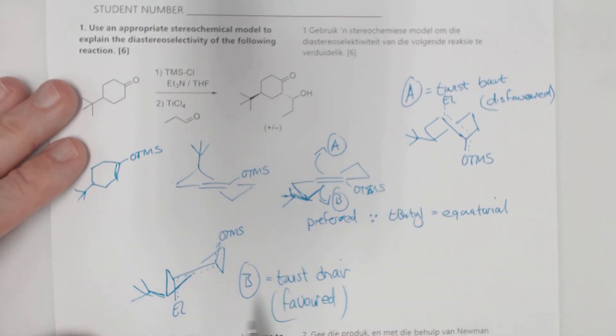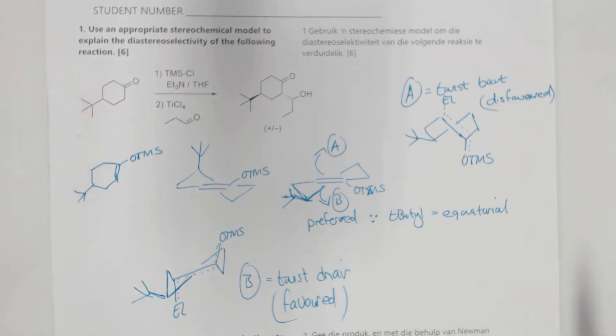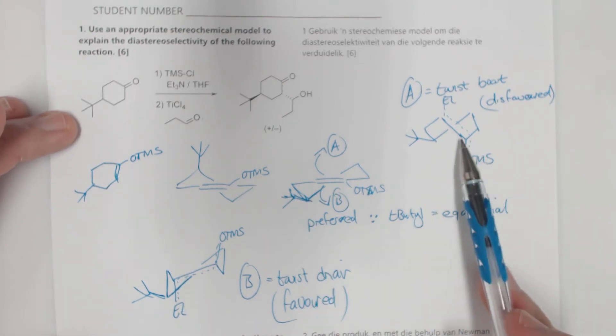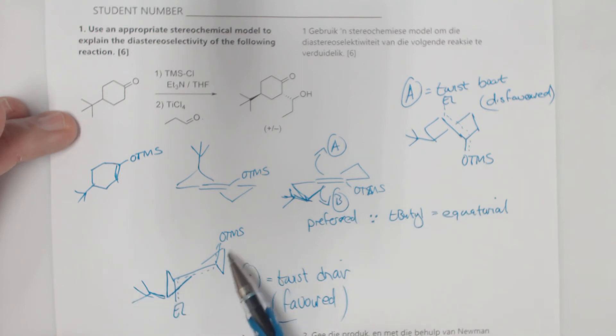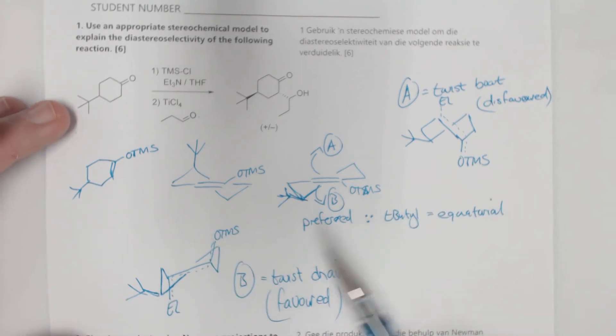So that would have been enough for me to give you your six marks and that would have been fine. Make sure if you can draw out these two things and they need to be drawn correctly. I mean you can't just draw a structure and leave out the t-butyl group or leave out the OTMS.